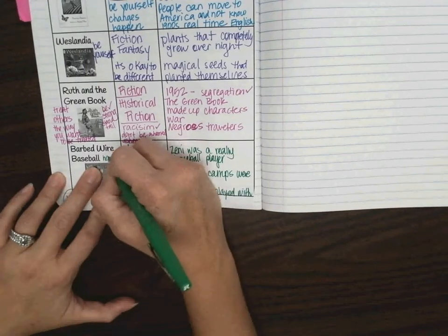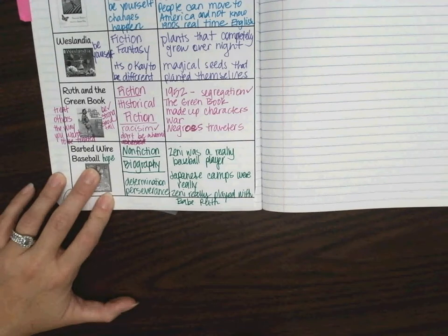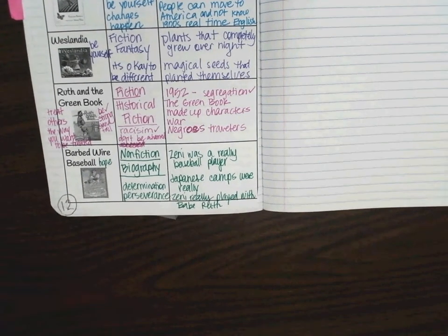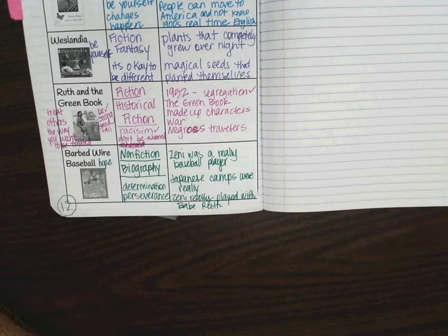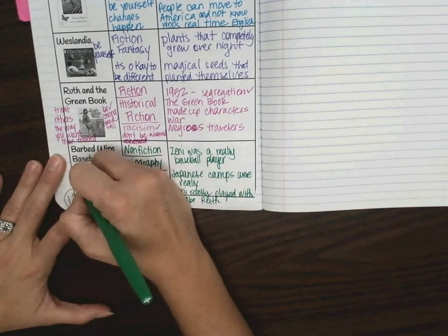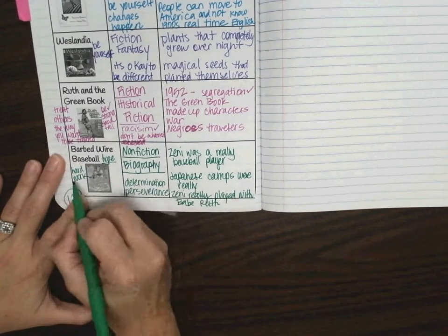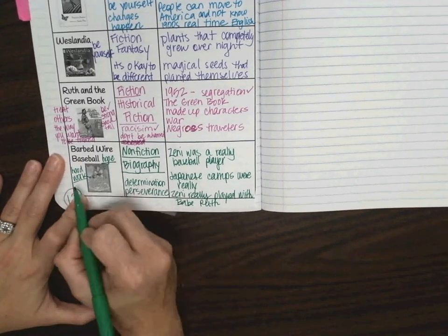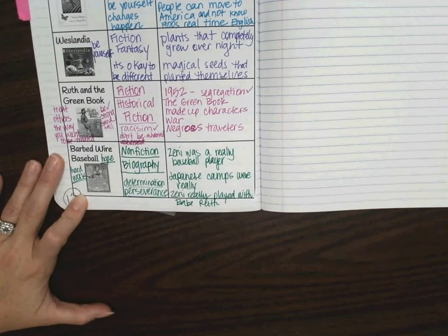It could be hope when things are hard. So, if there's any other themes that you could think of, you can add them there. Hard work. So, as you go on to your reader's response, here are some themes that you could use. Hope, hard work, determination, perseverance. Okay?